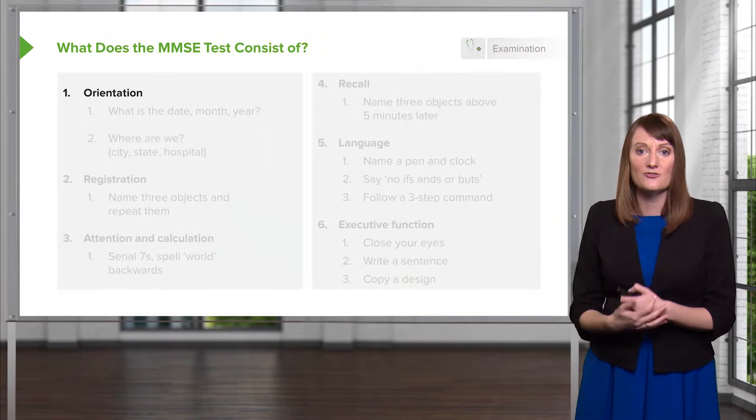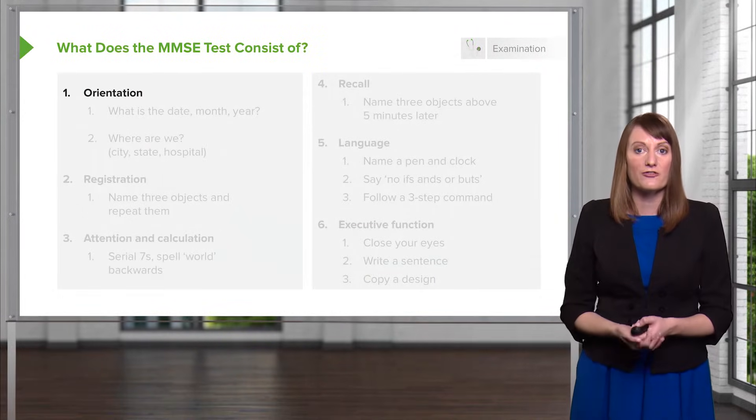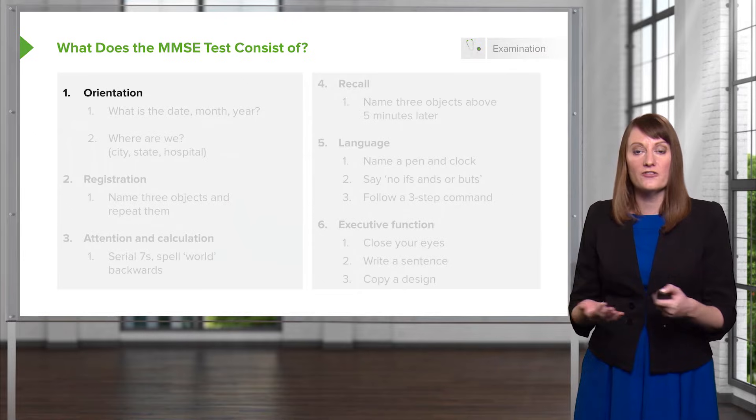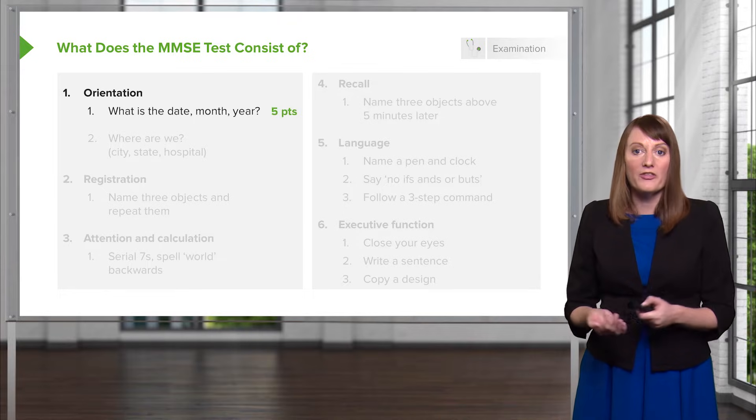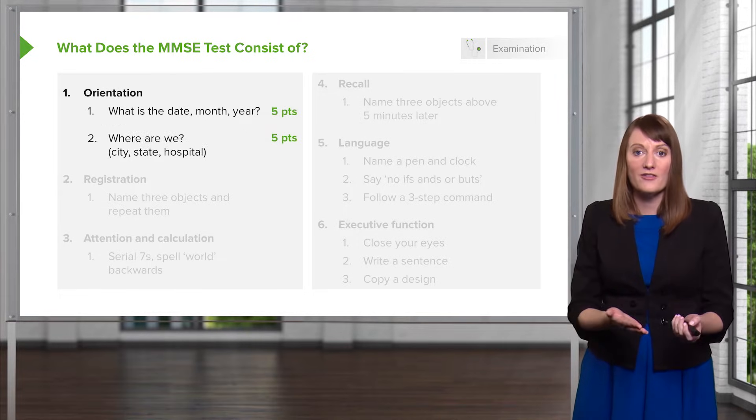There are a lot of things that you can test for, and this is scored out of 30 points. Here's a chart that helps to summarize a little bit about what you're looking for. Things like orientation for the patient, do they know what the month and year is? Do they know where they are?